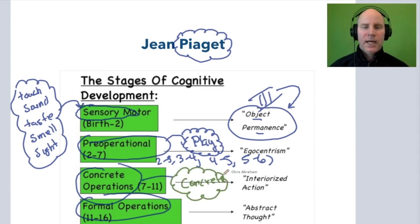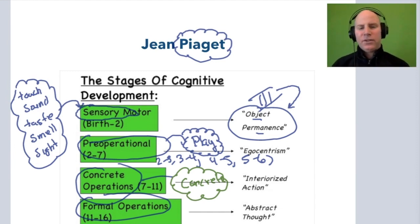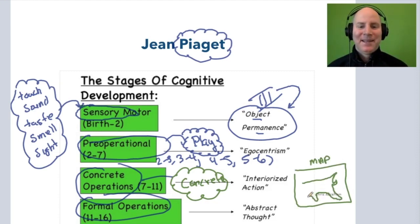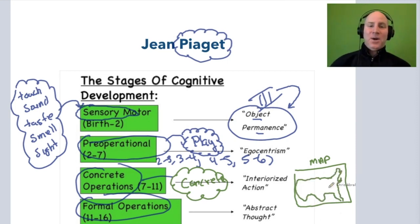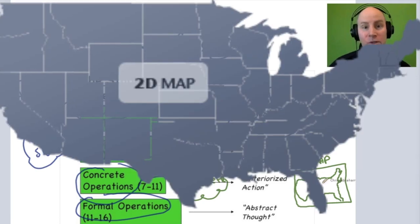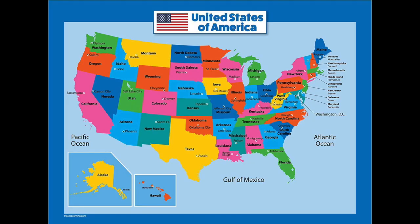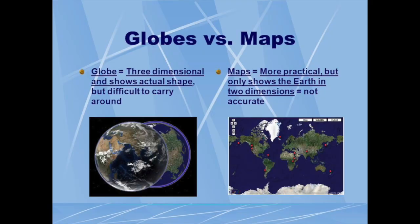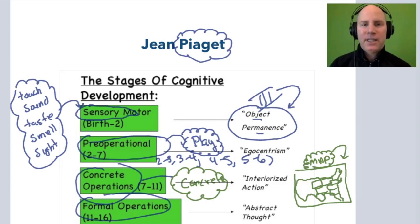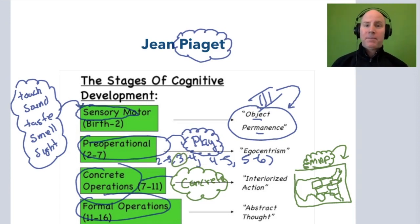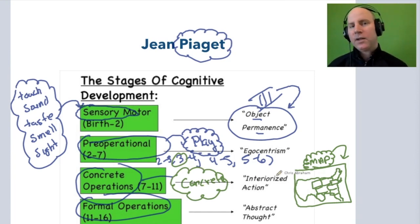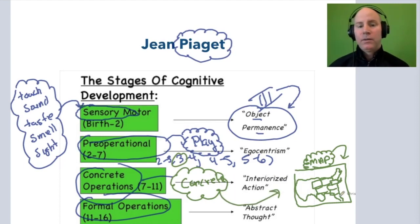For concrete operational, think concrete. We think of our first and second graders — they're learning through concrete things. For example, a map is a 2D representation of the United States and a very concrete way of organizing states and cities. We use concrete manipulatives and things like maps and graphic organizers to help facilitate content learning in primary school. If you give a map to a three-year-old, they might eat it or tear it up — but with a first or second grader, the map becomes a tool to facilitate learning.